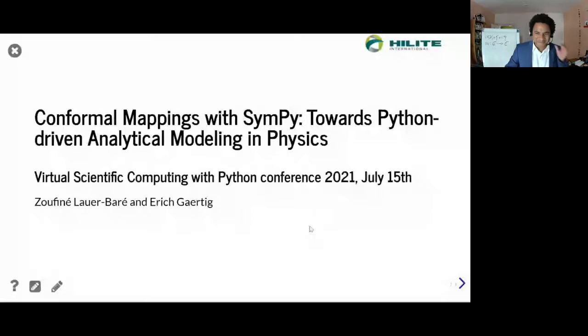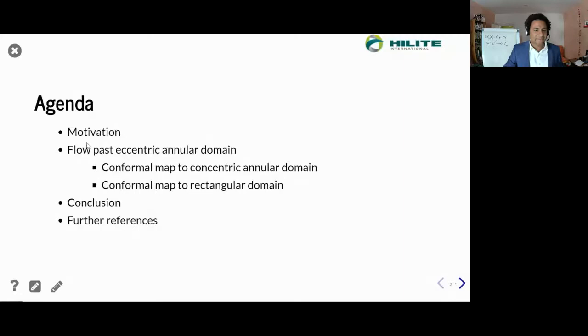The agenda is as follows: I will start with a motivation of the problem, then present the flow past an annular domain, particularly an eccentric annular domain. I'll show how a conformal map transforms the eccentric annular domain to the concentric annular domain where it's easier to solve, and then show how it can be mapped to a rectangular domain. Then I'll conclude with references.